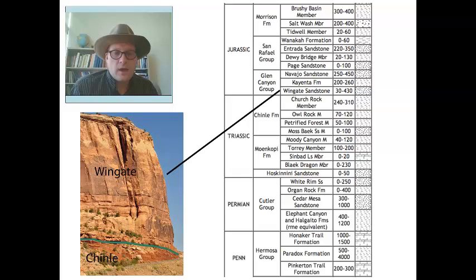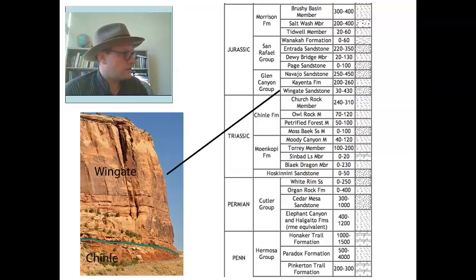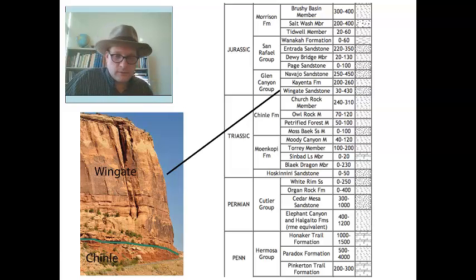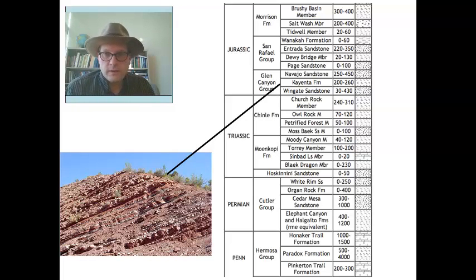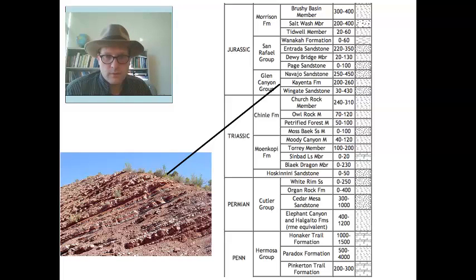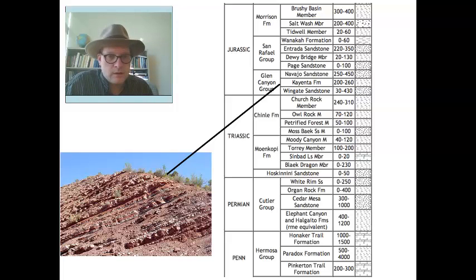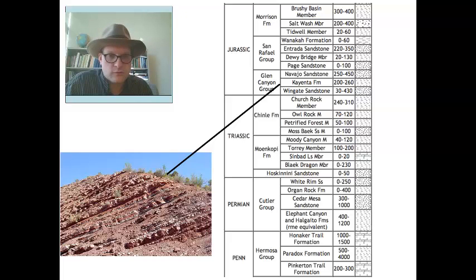On top of the Chinle we have the Wingate Sandstone, the first Jurassic unit in our section. The Wingate is a massive quartz arenite sandstone, fairly thick, probably representing deltaic-type facies. On top of the Wingate we have the Kayenta Formation, a fairly thin formation that is an early Jurassic unit, often interpreted as fluvial — river-type deposits — usually a little bit thinner-bedded with some cross-bedding.